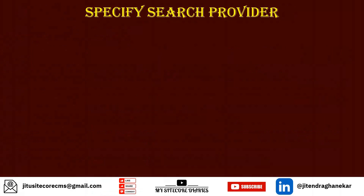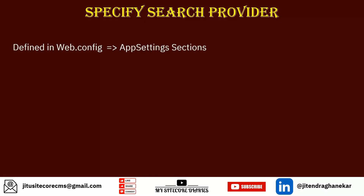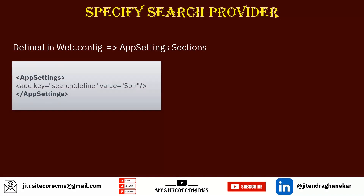Now let's talk about how to specify which search provider is used in Sitecore. That can be defined in web.config in the appSettings section, where you add the key 'search.provider' with a value of 'Solr'. The available values are Solr, Lucene, and Azure. Whatever you want to use, you specify it there — that is how you configure the search provider.